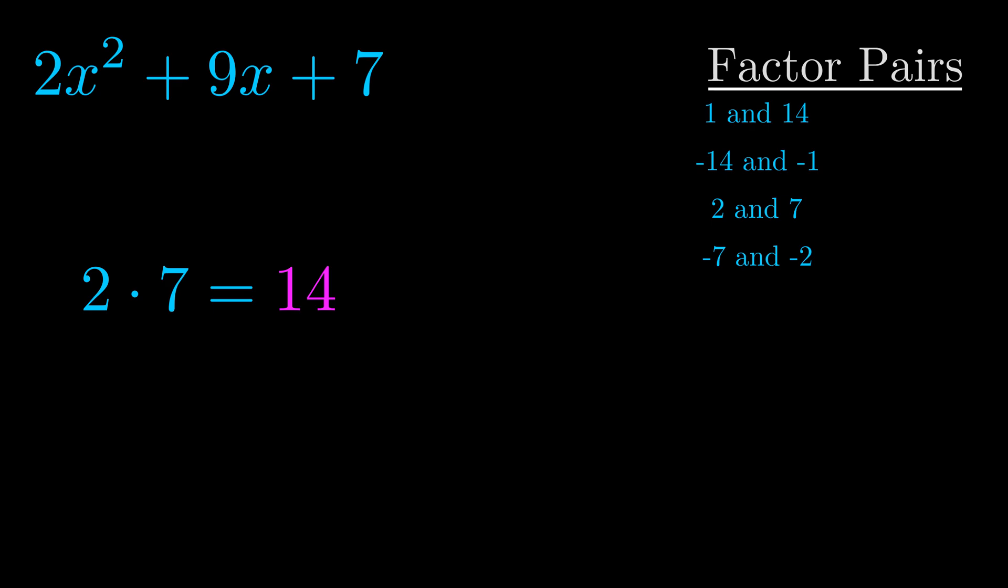The b value is the coefficient on the x term. That's the middle term, the one that we haven't done anything with yet.